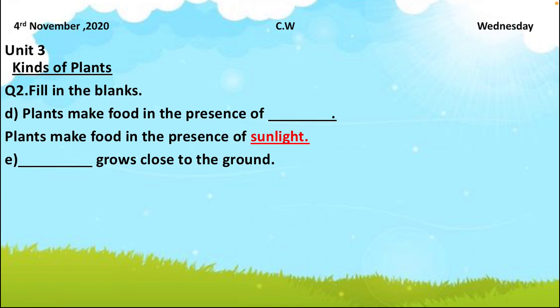Statement E: blank grows close to the ground. Trees don't — trees are tall. Which plant grows close to the ground? Coriander, spinach, mint — they all grow close to the ground and they are all herbs. So the answer is: herbs grow close to the ground.